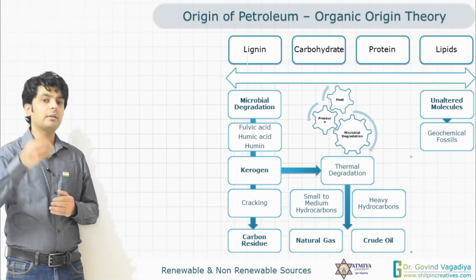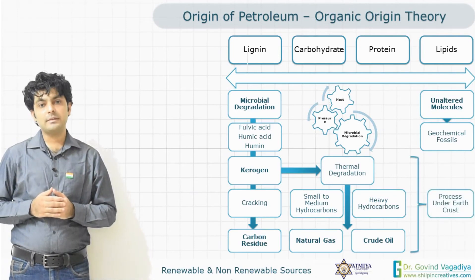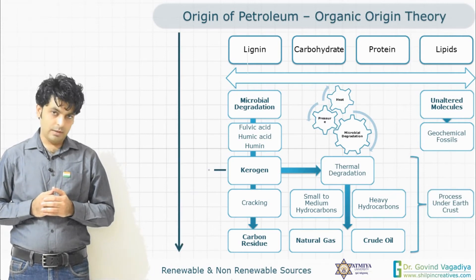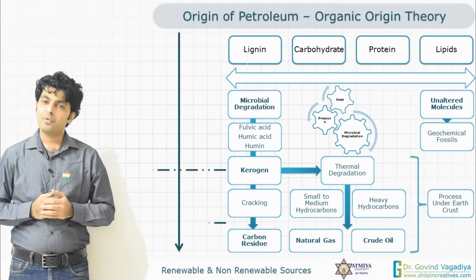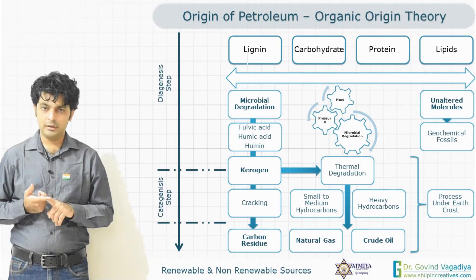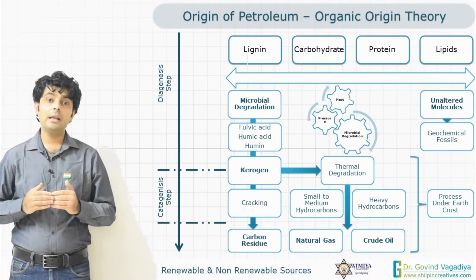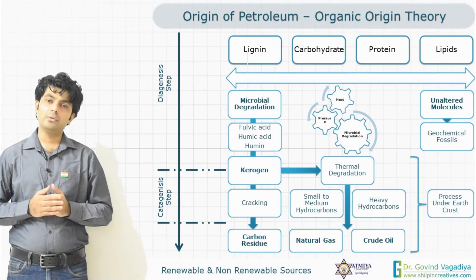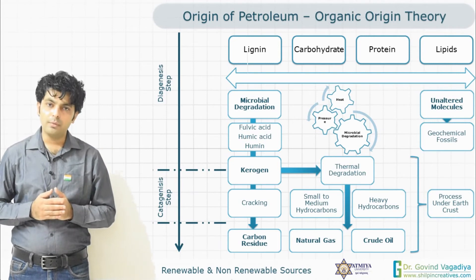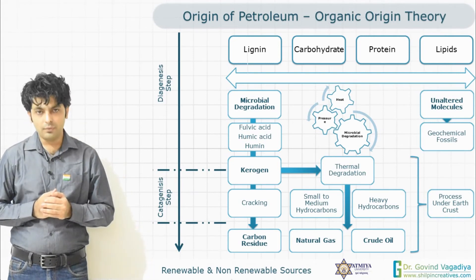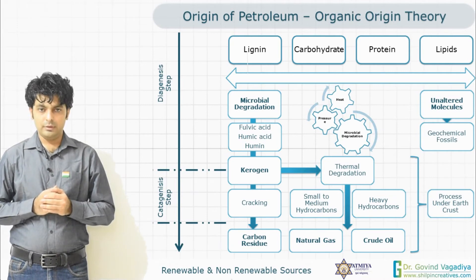If degradation further proceeds beyond kerogen, another step called catagenesis takes place. In the catagenesis step, three different products can be obtained: the first is natural gas, the second is crude oil (petroleum), and if the material is highly and vigorously cracked, it is converted into coal.